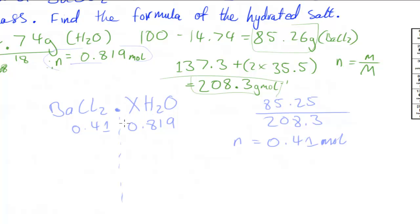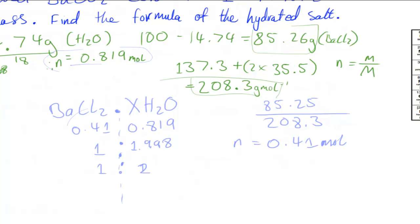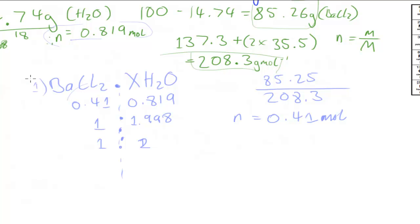I'm going to divide both values by 0.41 so that the BaCl₂ side equals 1, giving the form 1 : x. Dividing 0.41 by 0.41 gives 1, and dividing 0.819 by 0.41 gives 1.997 — approximately 1.998 — which we round to the nearest whole number to get a ratio of 1 to 2. Therefore x equals 2.